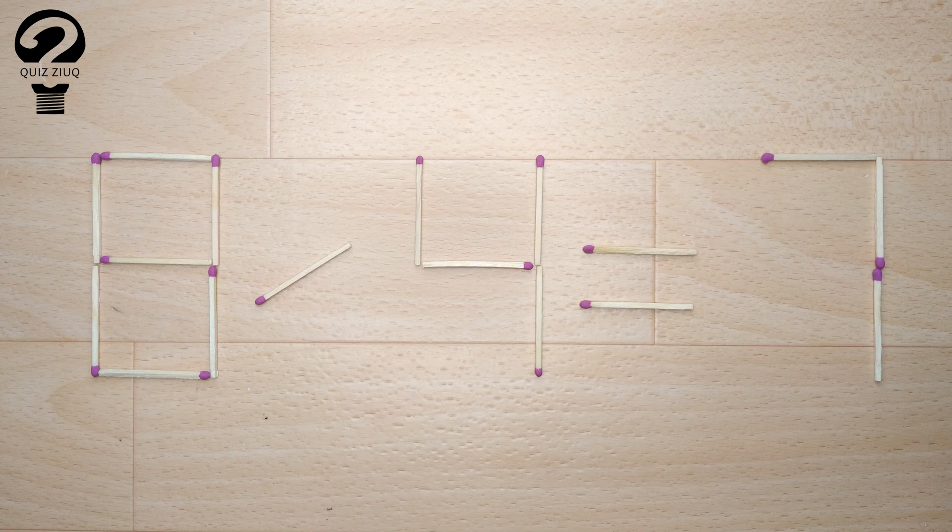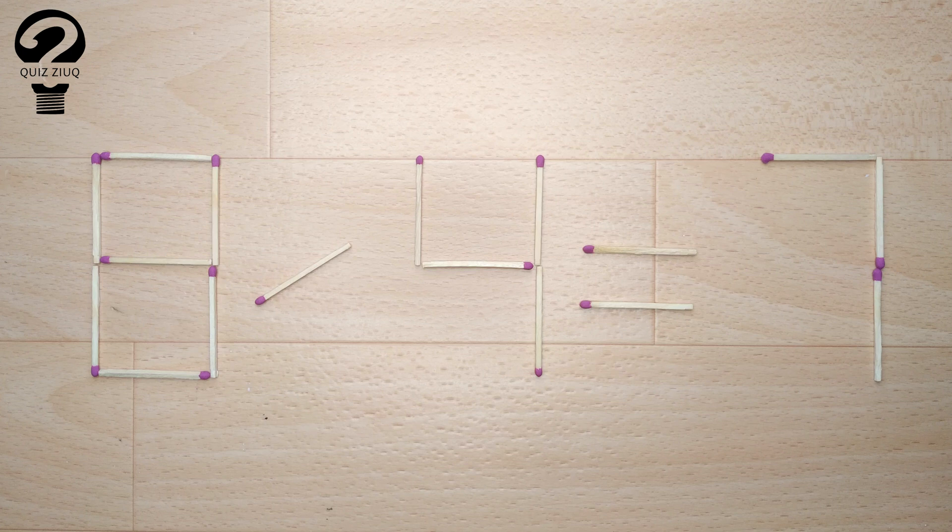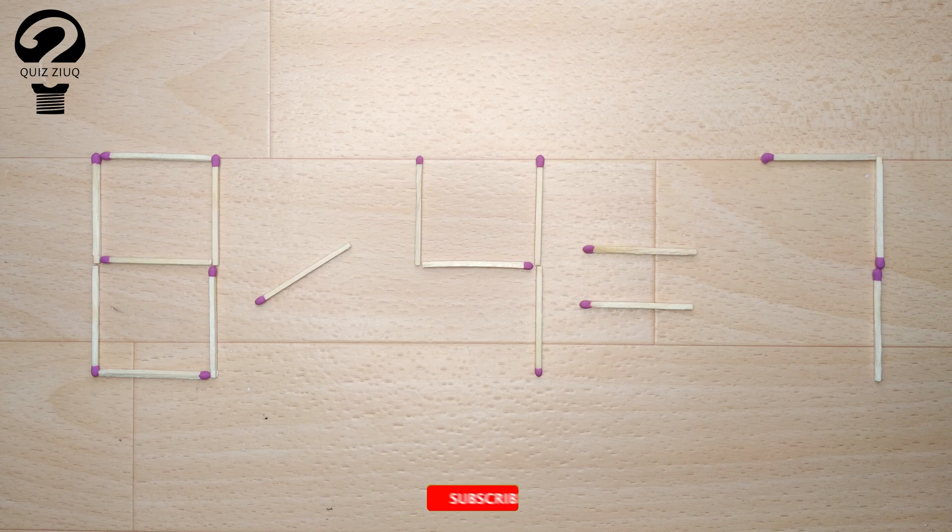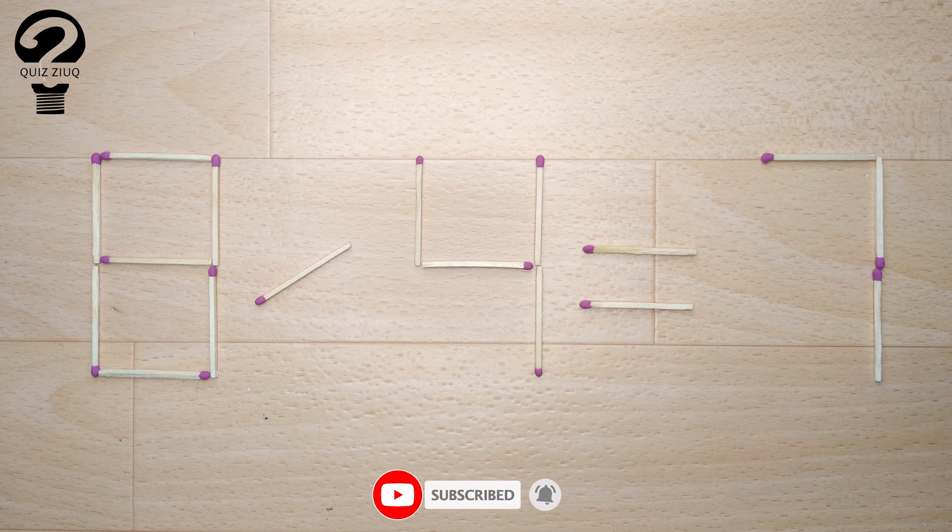This is a fairly simple mathematical problem that both children and adults can easily solve. Those who think logically can easily solve this problem. We need to move two matches to make our equation correct.